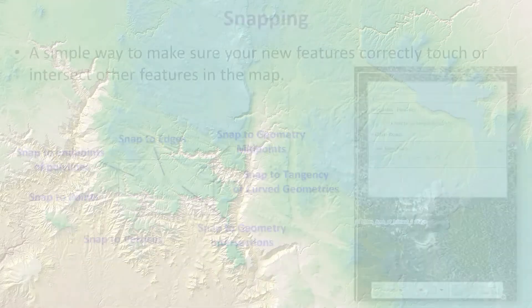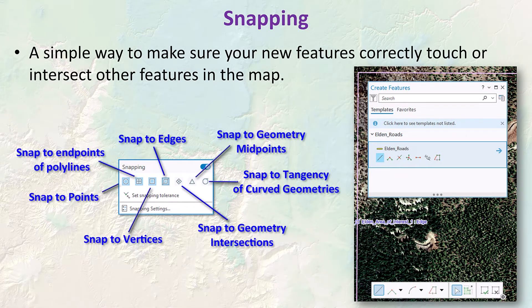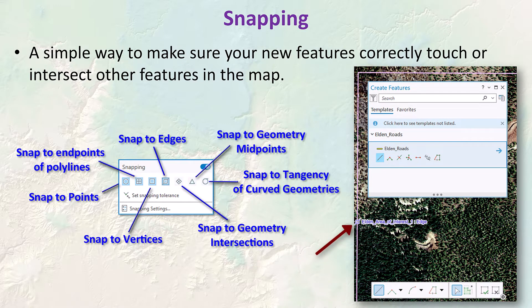Now let's talk about snapping. Snapping is a simple way to make sure that your new features correctly touch or intersect other features in the map. For example, if you want to draw a new road, you can make sure it starts at exactly the right line by snapping the road vertex to it. The snapping environment lets you pick which parts of features you want to snap to — for example, you could set it to only snap to existing vertices rather than any point on a line.